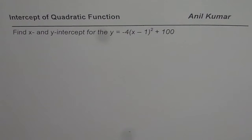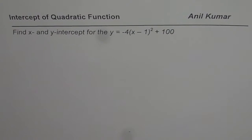I am Anil Kumar. We are exploring how to find intercepts of quadratic functions. The question here is: find x and y intercepts for y equals minus 4 times (x minus 1) squared plus 100.